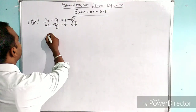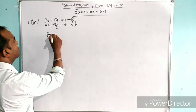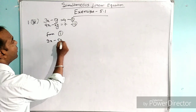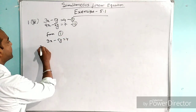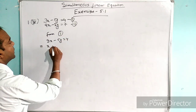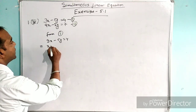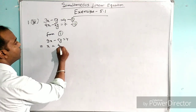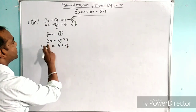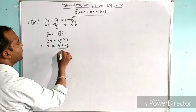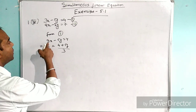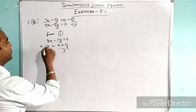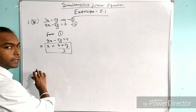Now we will take from equation 1. From equation 1, what is equation 1? We have 3x minus 5y equal to 4. So we get the value of x. What we do here is: x equals 4 plus 5y divided by 3. This is the value of x.